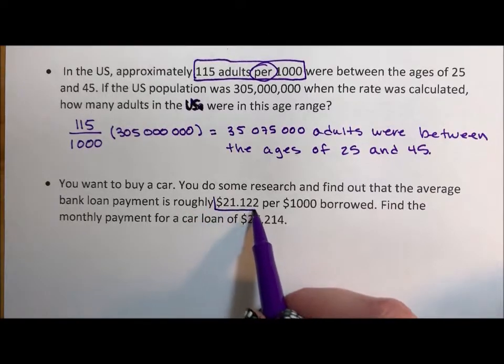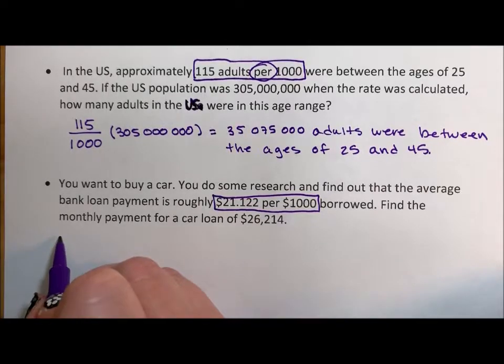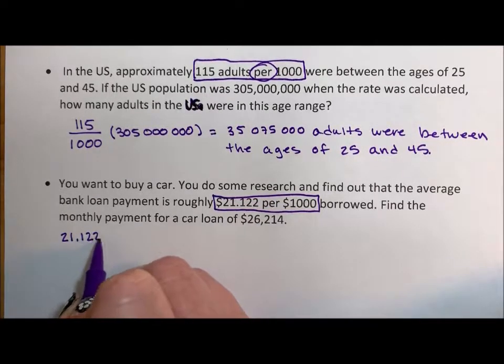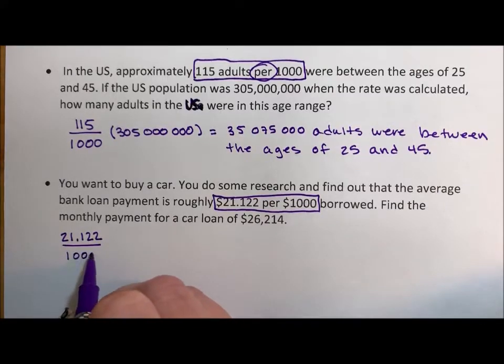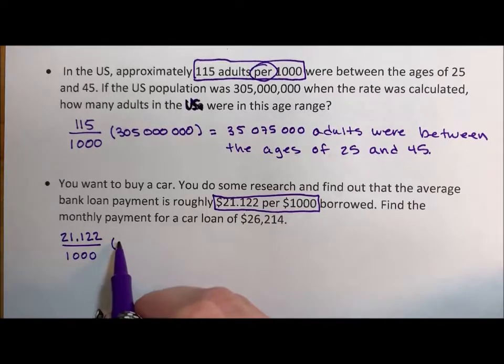Here we go. There's that word per. Per means rate. There's our fraction. 21.122 over a thousand. Again, that word per means, hey, here's our fraction. Here's our part of our whole. Then we multiply it again by the $26,214.